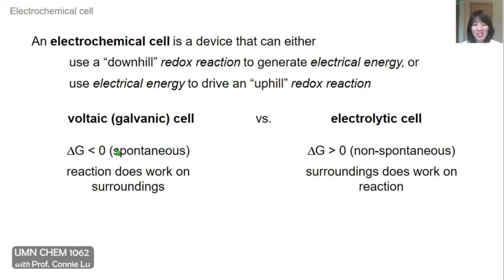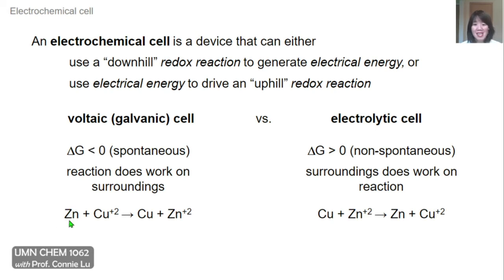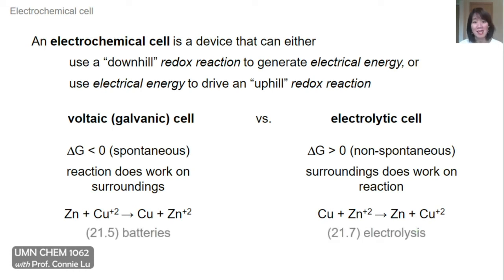These differ by whether the redox reaction is spontaneous or not. If it is spontaneous, like in the voltaic cell, the redox reaction can do work on the surroundings. If it's not spontaneous, like in the electrolytic cell, you need the surroundings to do work on the reaction for it to proceed. In the zinc-copper example, the spontaneous direction could power a voltaic cell, but the non-spontaneous reaction could be performed in an electrolytic cell with a power supply driving the uphill reaction. There are key applications for both: all batteries are voltaic cells, and an important process using electrolytic cells is electrolysis, where metal ores are reduced to extract the metal element.